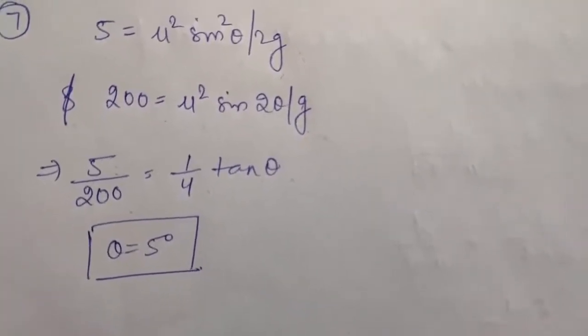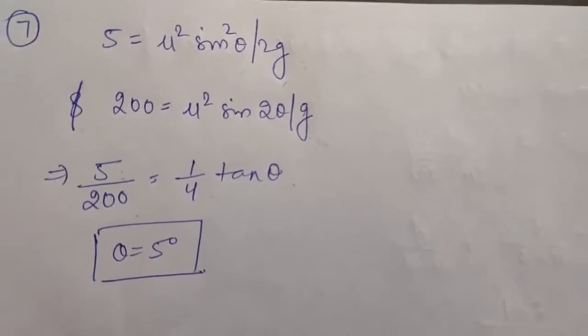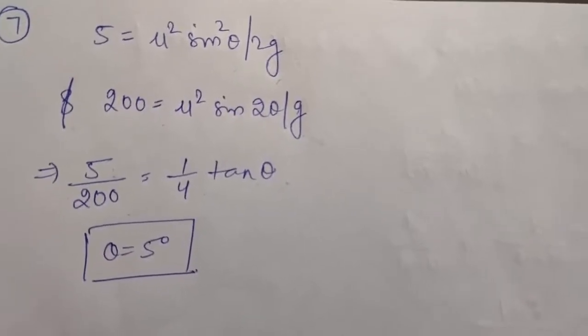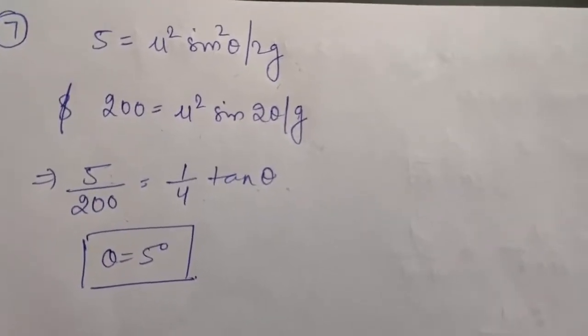So this is the angle of projection for which the height will be 5 metres and the horizontal range will be 200 metres.